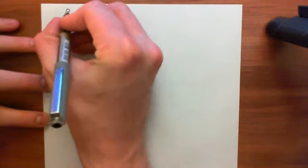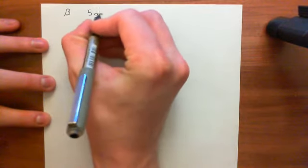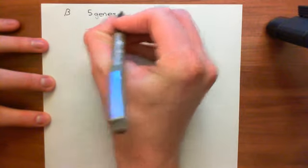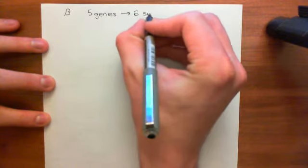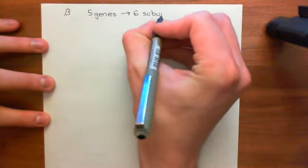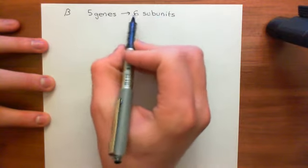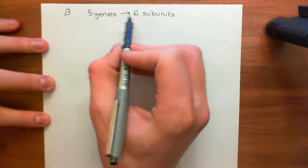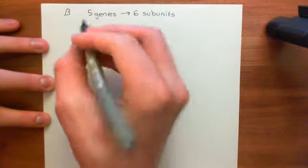Let's turn our attention to beta subunits. In the case of beta subunits, there are five genes, but then there are six actual subunits. What we know must have happened is one of those five genes must have two splice variants, which is how we've ended up with six different known subunits even though we've only got five known genes.